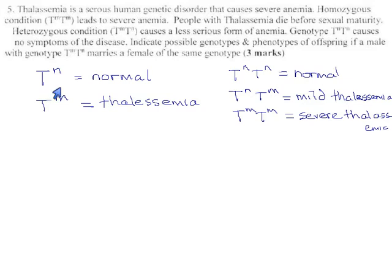Okay, so incomplete dominance, because while we have a normal and a severe thalassemia allele, when you mix them, you don't get either of those traits. You get something in between. That's what incomplete means. Neither of them completely wins out.